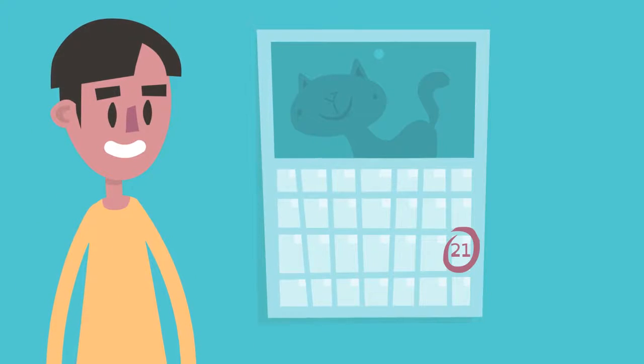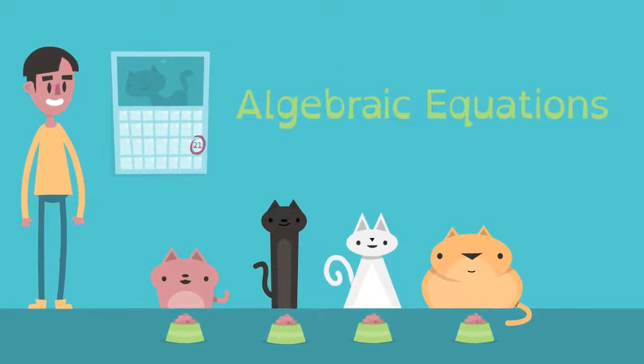Jason knows he needs a new bag of cat food in 21 days, thanks to algebraic equations.